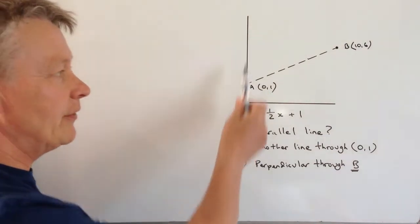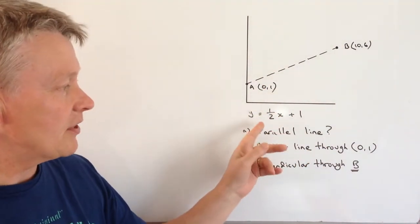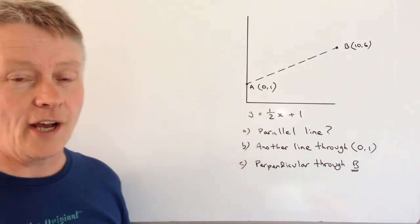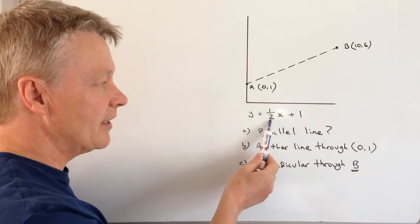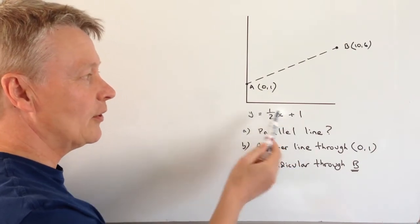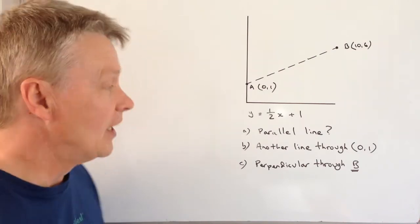So the first thing is we've been given this piece of information we're told that this line is y equals a half x plus one. What that means is that the gradient is a half and it crosses this y-intercept at plus one.